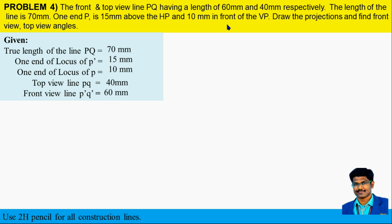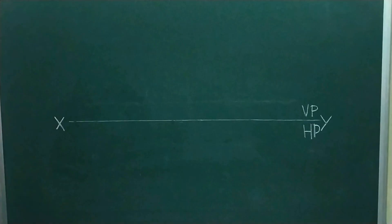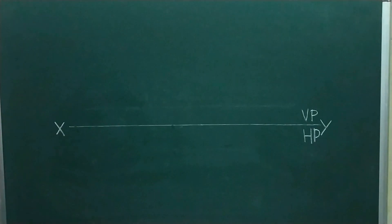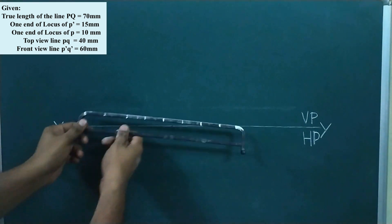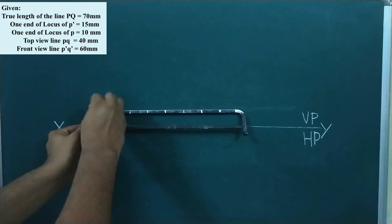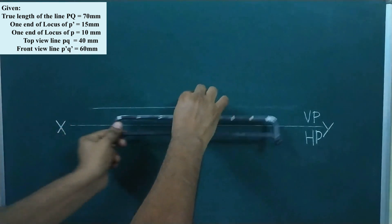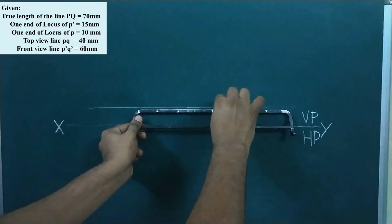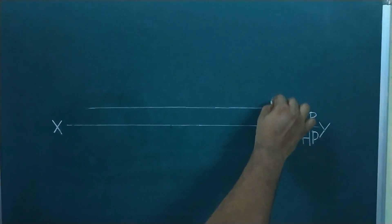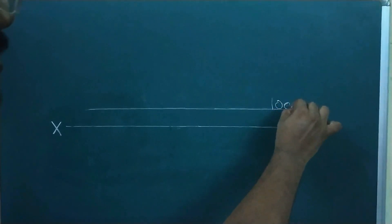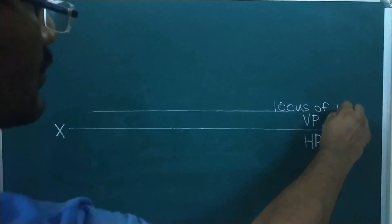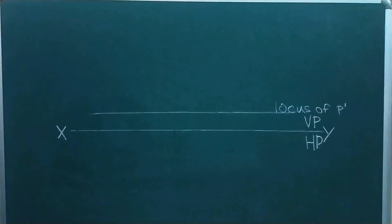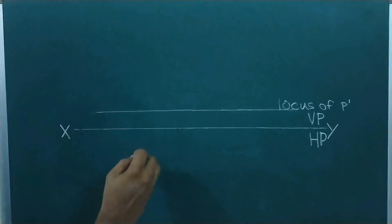Let's draw the known things first. Draw the XY line and mark VP and HP. One end of the locus, that is P-dash, is 15 mm above the HP. From the XY line, measure 15 mm and draw the locus line in VP. It must be parallel to the XY line. After drawing that line, give it a naming — locus of P-dash — and show its dimensions with proper pencils.